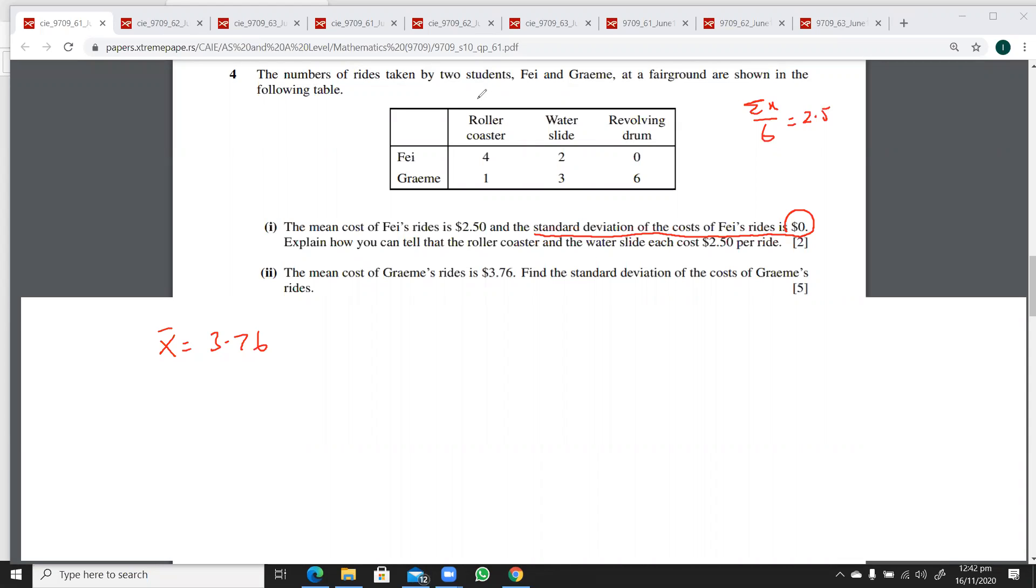So I'll write $2.50 here and $2.50 here. Let's keep this as α. We have to find how much the revolving drum is costing.